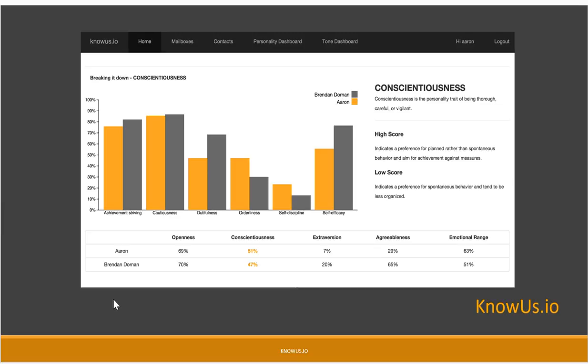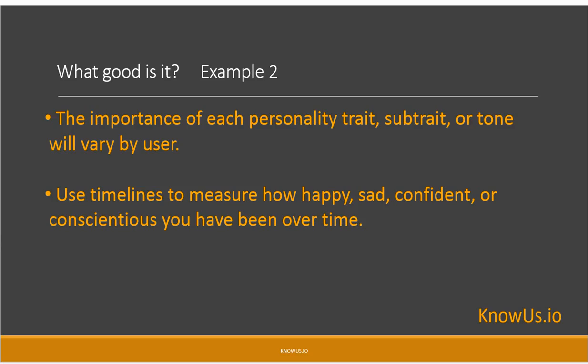That's one way you can immediately benefit from Know Us. We also have tonal measures — you can measure how happy someone is, how sad they are, and how confident the emails are coming across overall.